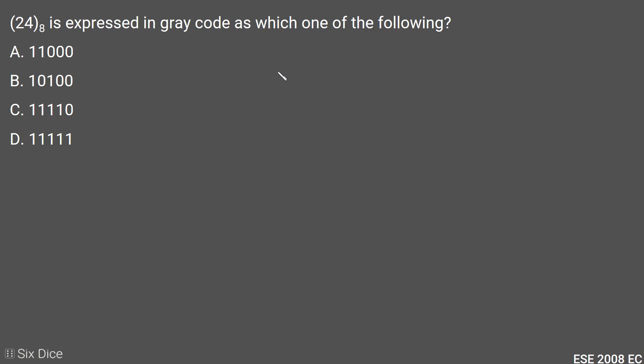Let's start with converting the octal number into binary. So 4 will be represented in binary as 100, and 2 will be represented as 010. Now we get our binary representation.